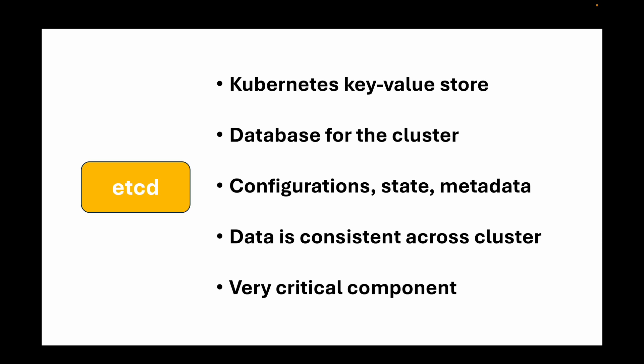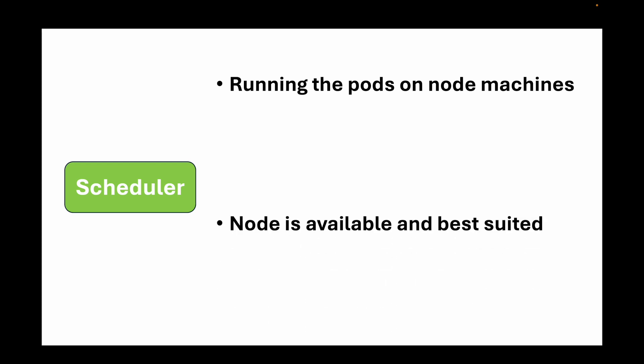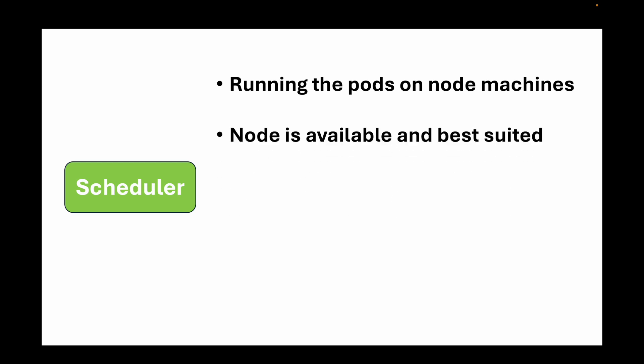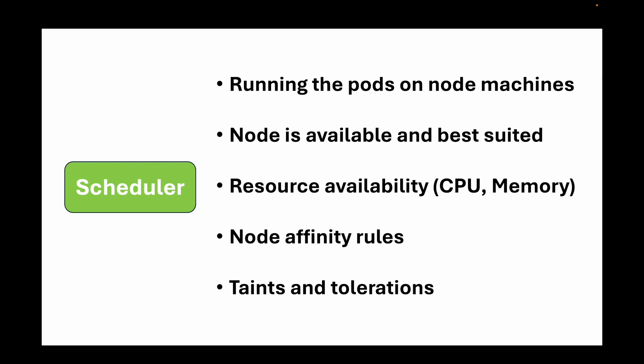The next component is the scheduler, which is another important component of your control plane. The scheduler is responsible for running pods on your worker machines. When you run kubectl to create pods, the scheduler determines which node is available and best suited to run the newly created pod. Nodes are selected based on resource availability — CPU, memory — as well as any node affinity rules, taints, and tolerations that are applied.